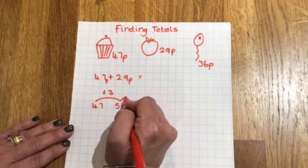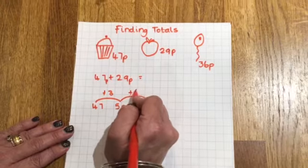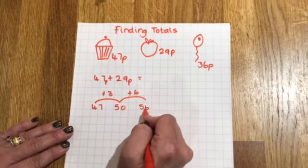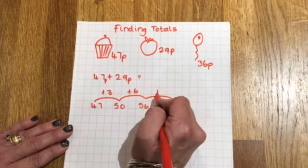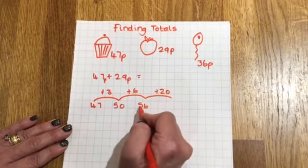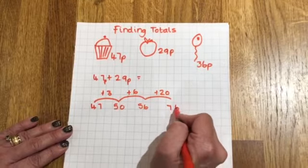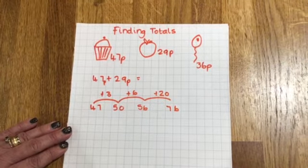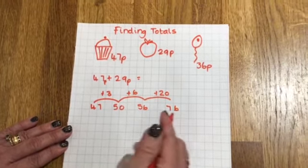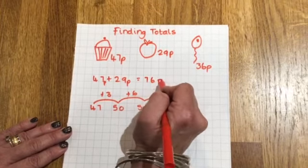So let's add on the 6. 50 add 6 is 56. And then let's add on the 20. 56 add 20 that's 66, 76. So 47p add 29p gets me to 76p.